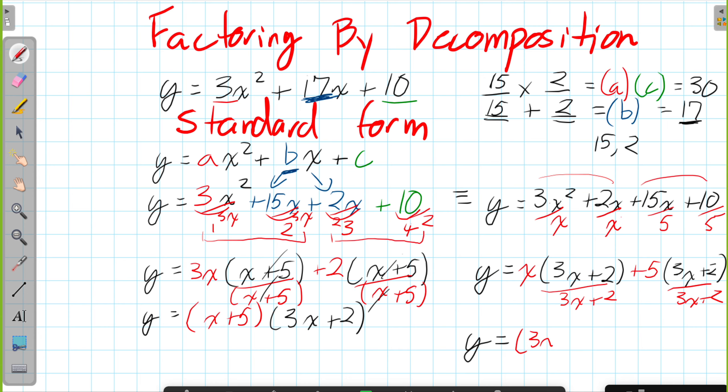Because we common factored out 3X plus 2, I write it in red just to show that. And what's left over would be in the other bracket. Well, we have an X and we have positive 5. And because of that associative property of multiplication, it doesn't matter the order of the brackets. They both end up being the same thing. So when you decompose, it doesn't actually matter what value you put first or second. You'll end up at the exact same answer.